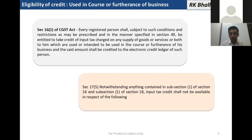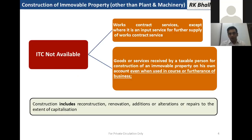But there are other clauses which help us understand whether this ITC is eligible or not. Section 17(5) is a non-obstante clause. It says that notwithstanding anything contained in Section 16(1), input tax credit shall not be available in respect of the following. There is a negative list. Clause C of Section 17(5) says that input shall not be allowed in the case of works contract services received, except where it is an input service for further supply of works contract service. So the works contract service input is barred except when you are further providing that same service.